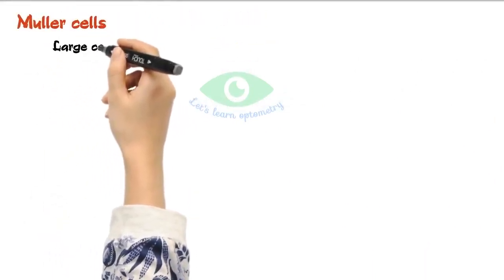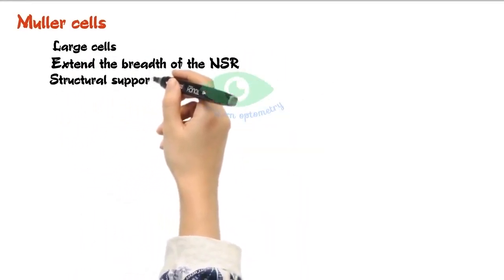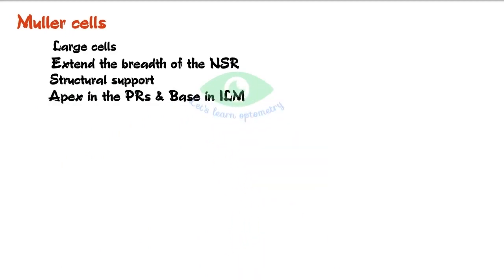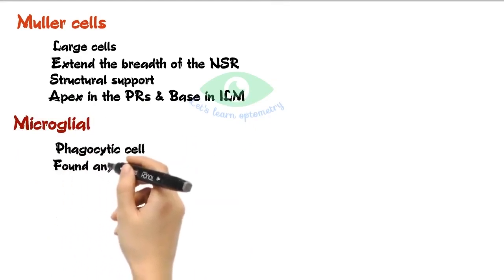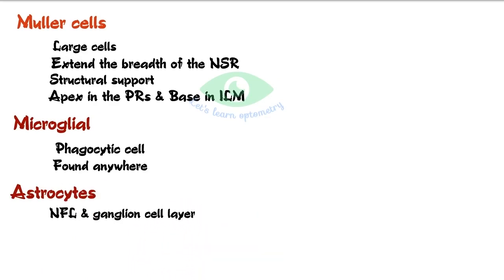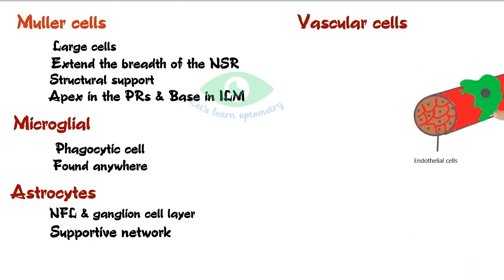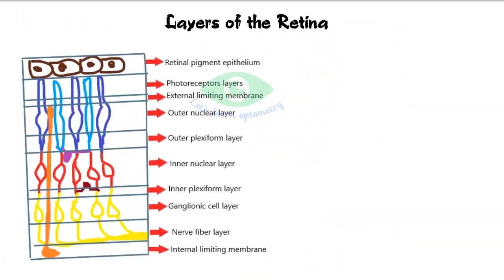Muller cells are large cells that extend the full breadth of the neurosensory retina. They provide structural support, neuron survival, and homeostasis of the organic environment. The apex of the cell lies in the photoreceptor layers and the base forms the internal limiting membrane. Microglia are phagocytic cells found anywhere in the retina; their numbers increase in injury and inflammation. Astrocytes are star-shaped cells found in the nerve fiber layer and ganglion cell layer, forming an irregular supportive network that encircles inner fibers and retinal capillaries. Vascular cells: endothelial cells comprise the inner lining of vessels, while pericytes encompass blood microvessels.